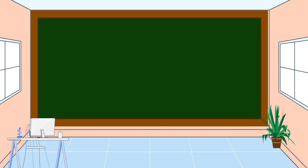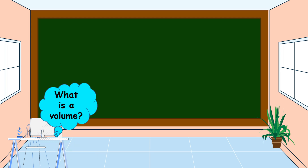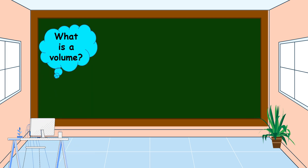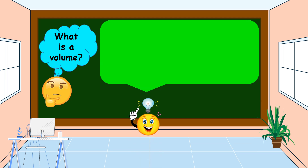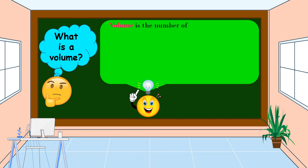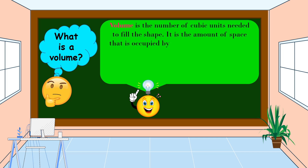Before we discuss how to find the volume of a cube and a rectangular prism, let's define first what volume is. Volume is the number of cubic units needed to fill the shape. It is the amount of space that is occupied by a space figure.